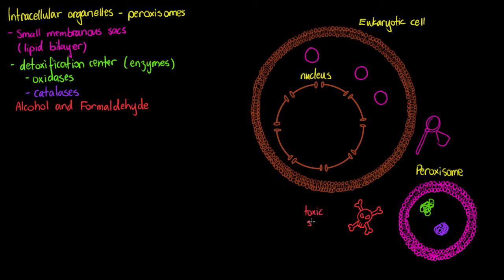Now if we pretend we have this toxic substance here within the cell it's going to enter into our peroxisome where it's going to be broken down. So we have our enzymes working on this toxic substance.